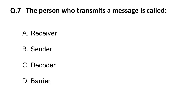The next question is: a person who transmits a message is called what? This question is from the communication section. Options are: A) receiver, B) sender, C) decoder, D) barrier. The correct answer is B: the person who transmits a message is called the sender.